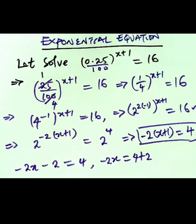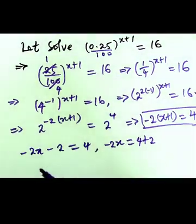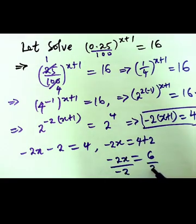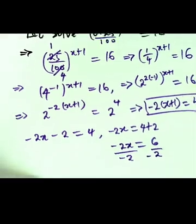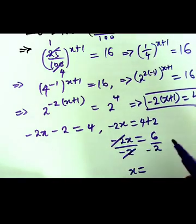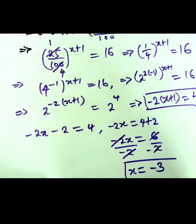Then we divide both sides by -2. We cancel this, and we have x equals 6 divided by -2, which is -3. So x equals -3 is the solution to this problem.